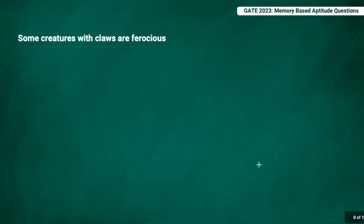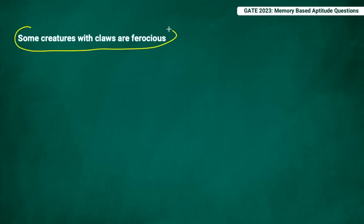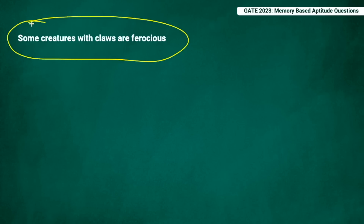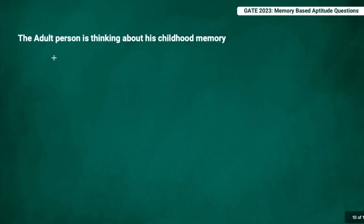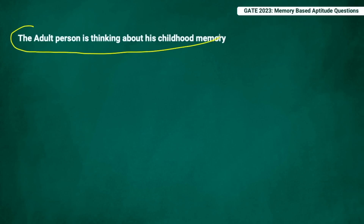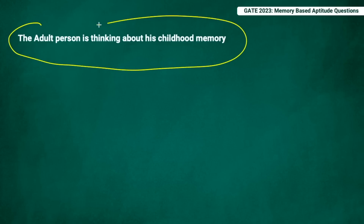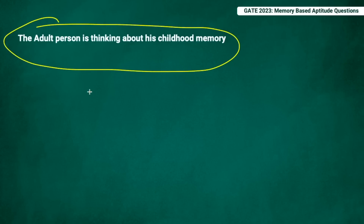The next question was based on syllogisms. The premises were roughly: some creatures are animals, they are ferocious; some animals with claws are ferocious. The correct answer should be: 'some creatures with claws are ferocious.' There was also a question based on a given paragraph asking what can be inferred — the paragraph was about an adult recalling childhood memories, so the correct inference is that an adult is thinking about his childhood.